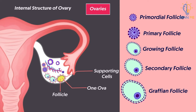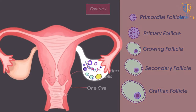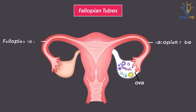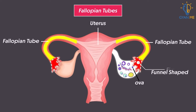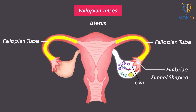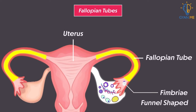Matured ova comes out of the ovary into a structure called fallopian tubes. Fallopian tubes are paired, originating from the uterus on either side. The terminal part of the fallopian tube is funnel-shaped with finger-like projections called fimbriae. These fimbriae lie near the ovary and pick up the ovum released from the ovary and push it further towards the fallopian tube.